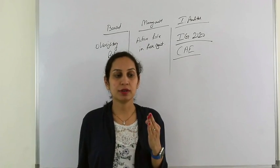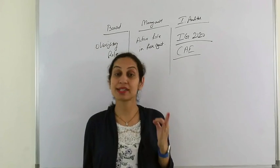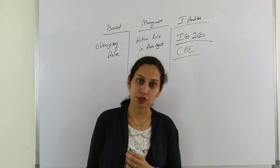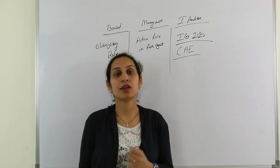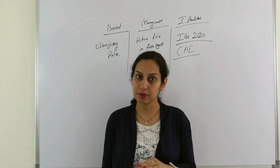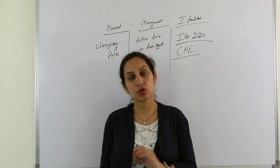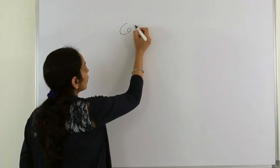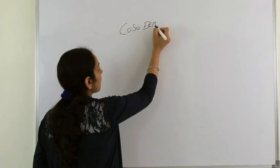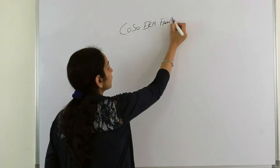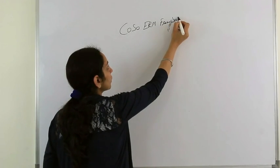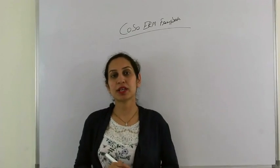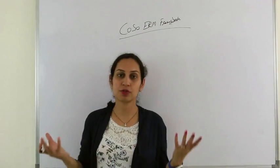So to recap: the Board has an oversight role, Management has the active role to manage risk, and Internal Auditors follow implementation guidance 2120 to evaluate and help management strengthen risk management. Now it's time to understand two more important concepts: COSO's ERM framework and ISO 31000. COSO stands for Committee of Sponsoring Organizations; ERM stands for Enterprise Risk Management.